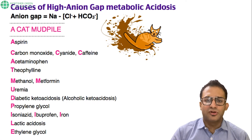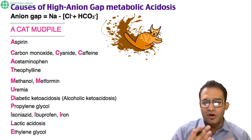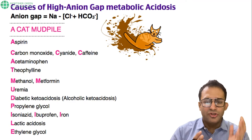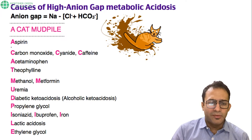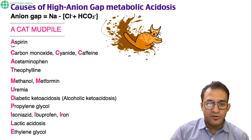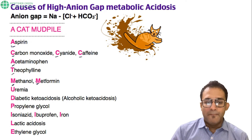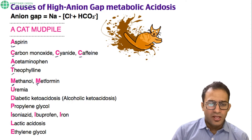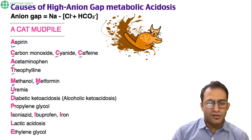Here is a simple mnemonic to remember the causes of high anion gap metabolic acidosis: CATMUDPILE. C is carbon monoxide, cyanide, and caffeine — too much coffee can also cause high anion gap metabolic acidosis. A is aspirin. T is theophylline. M is methanol and metformin — metformin is a very common cause of lactic acidosis. U is uremia in renal failure. D is diabetic ketoacidosis, where ketone bodies comprise the unmeasured anions. P is propylene glycol. I is isoniazid, ibuprofen, and iron. L is lactic acidosis. E is ethylene glycol.